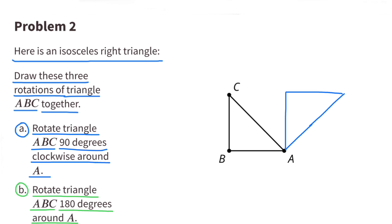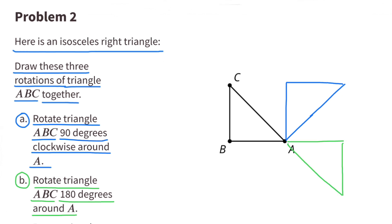Part B: Rotate triangle ABC 180 degrees around A. In green you'll see the 180 degree rotation using point A as center.